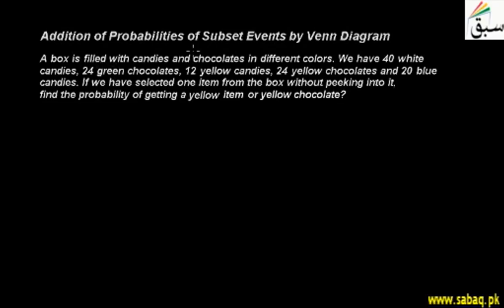Now let's talk about addition of probabilities of subset events by Venn diagram. A box is filled with candies and chocolates in different colors.